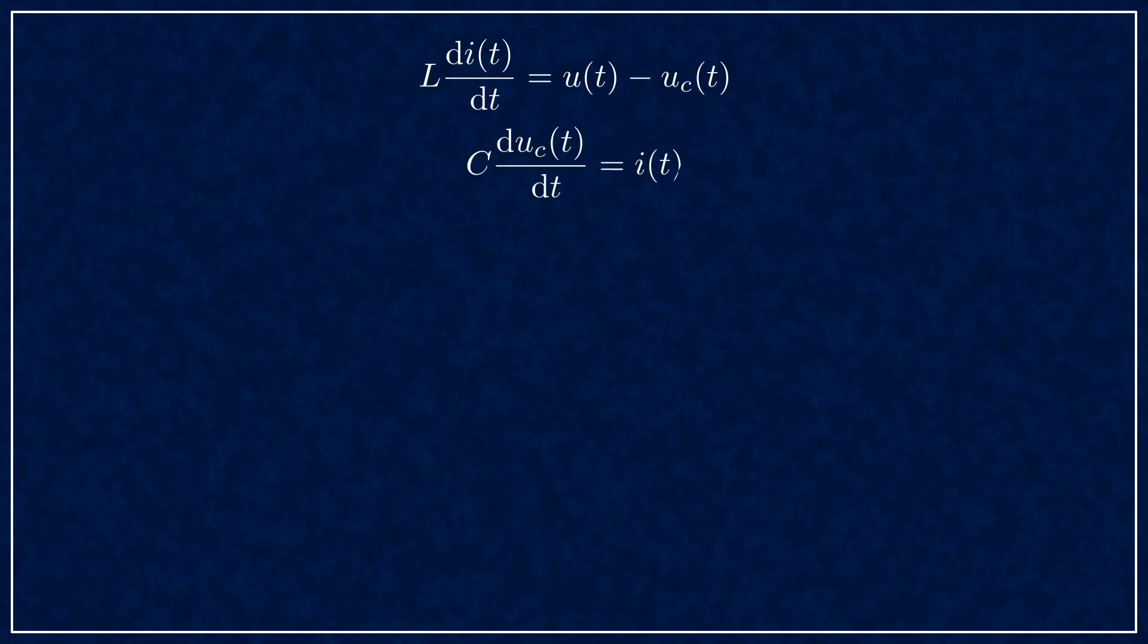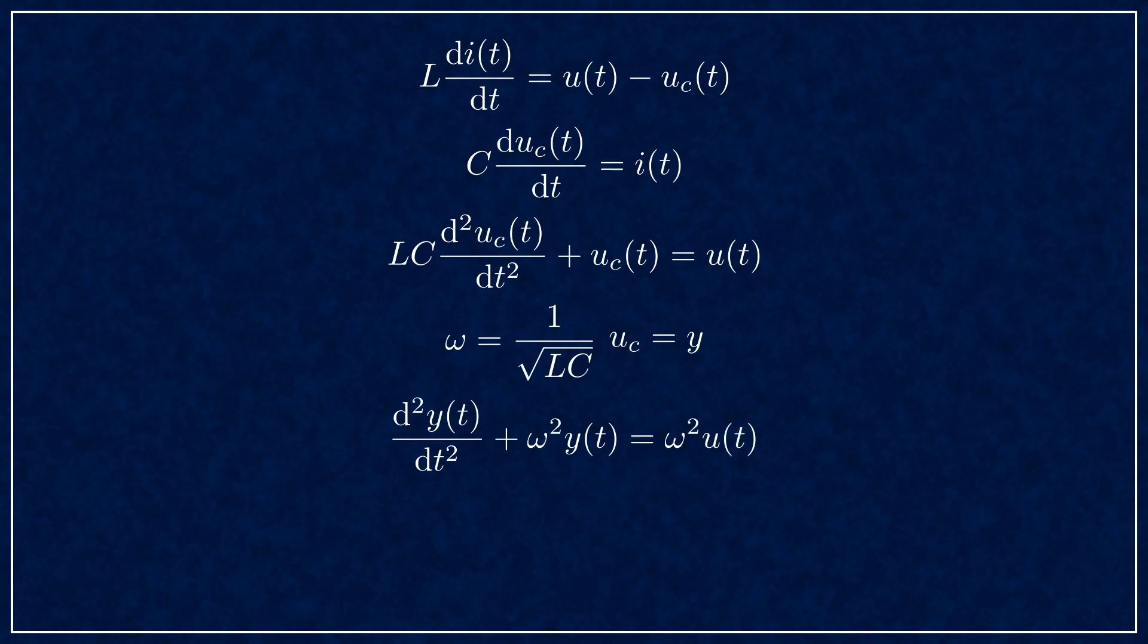Here's the system description in differential equation form. I'll introduce new variables y and omega to put it into a standard second-order ODE form, and this helps telling the difference between the measured and output voltage, otherwise we'd have too many U's.